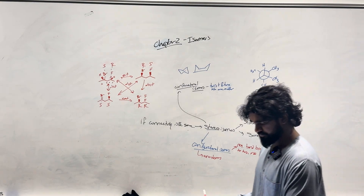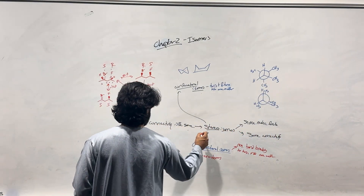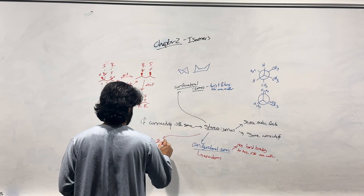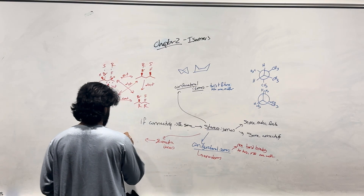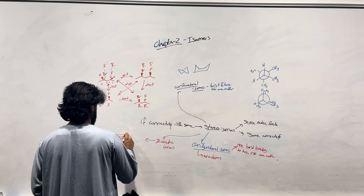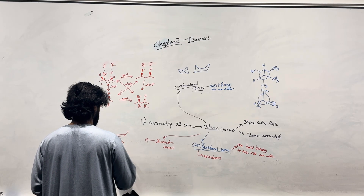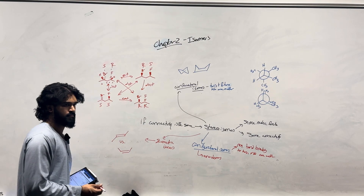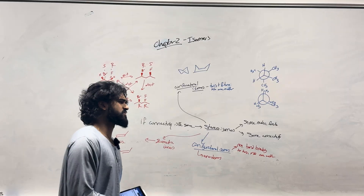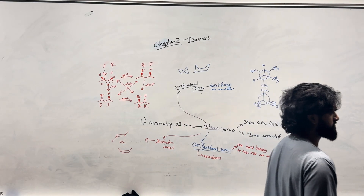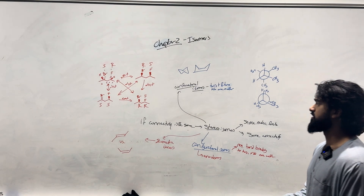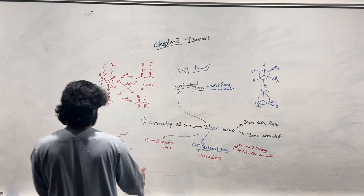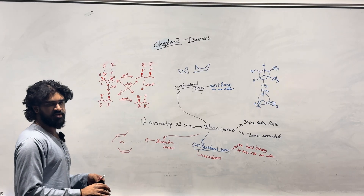Cis-trans isomers — these are known as geometric isomers. What's the difference between those two structures? Let's zoom in on the double bond for a second.